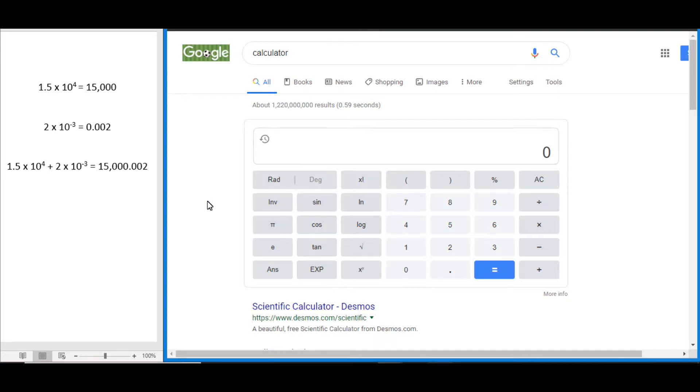For example, if we're given this number 1.5 times 10 to the power of 4, we can enter it like this: 1.5, press this EXP key, and you see we get this E here. This represents the times 10 to the blank. Our blank, or exponent, in this case is 4, so we press 4 and press equals, and you can see we get 15,000, which is what 1.5 times 10 to the power of 4 equals.